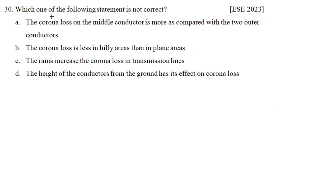Question number 30: Which one of the following statements is not correct? This question is from ESE 2023. Option A: corona loss on the middle conductor is more compared to the two outer conductors — this is correct, because the potential gradient on the middle conductor is higher. Option B: corona loss is less in hilly areas than in plain areas — this statement is wrong, so option B is the correct answer.